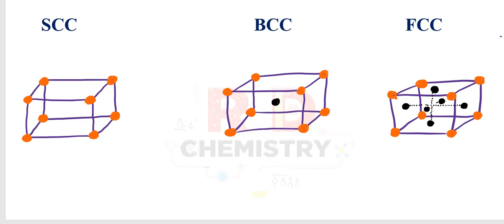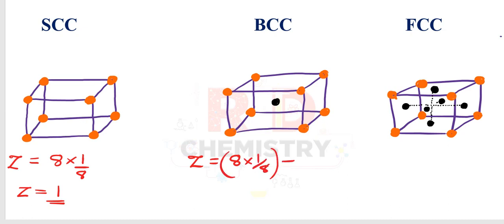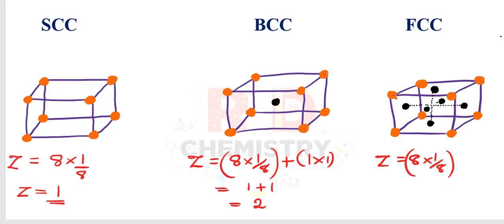Now let us calculate Z, the number of particles per unit cell. For SCC: 8 corners × 1/8 = 1, so Z = 1. For BCC: 8 corners × 1/8 plus 1 body center × 1 = 1 + 1 = 2, so Z = 2. For FCC: 8 corners × 1/8 plus 6 faces × 1/2 = 1 + 3 = 4, so Z = 4. These numbers are important for solving problems later.